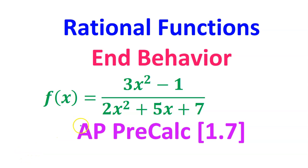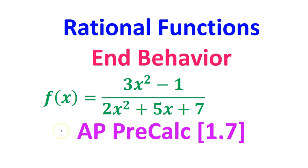In this video, we will practice finding the end behavior of rational functions. That includes horizontal asymptotes and slant asymptotes. This is AP Precalculus topic 1.7. If you did not watch the previous video where I introduced these concepts, you should probably watch that first. This video will make a lot more sense if you do.